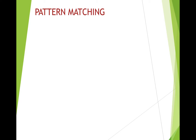Let's understand what pattern matching is. Say we have a relation called st_info with a column called 'name' containing a thousand names. If I want only those names that begin with 'A', I can do that using pattern matching. Similarly, if I want names that end in 'S', that can also be done using pattern matching.